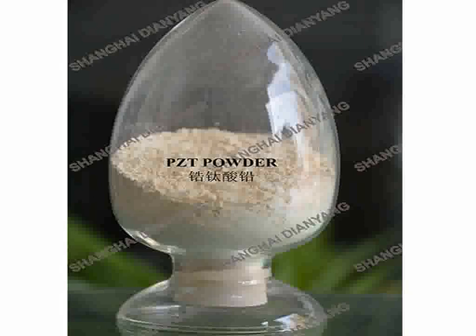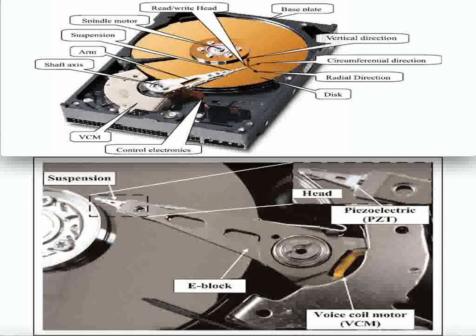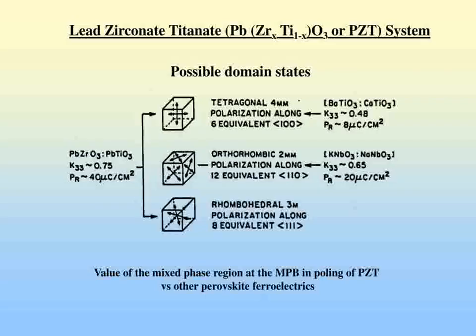Commercially, PZT is usually not used in its pure form; rather it is doped with either acceptors, which create oxygen anion vacancies, or donors, which create metal cation vacancies and facilitate domain wall motion in the material. In general, acceptor doping creates hard PZT while donor doping creates soft PZT.